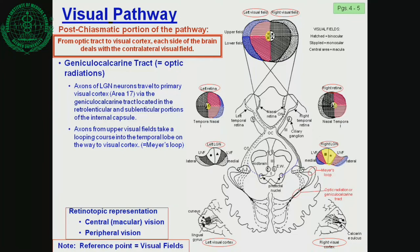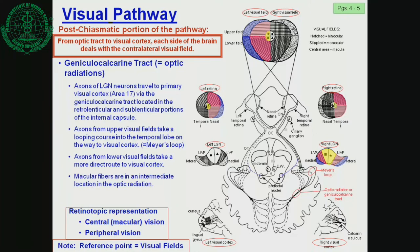The pathway to primary visual cortex travels via the geniculocalcarine tract, located in the retrolenticular and sublenticular portions of the internal capsule. The axons from the upper visual field take a looping course into the temporal lobe on the way to visual cortex. The axons from the lower visual fields take a more direct route to visual cortex. The macular fibers are in an intermediate location in the optic radiation.